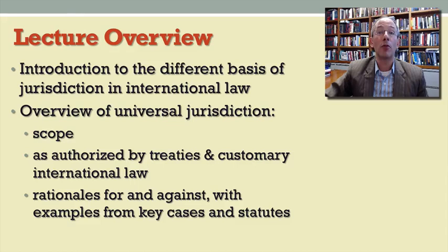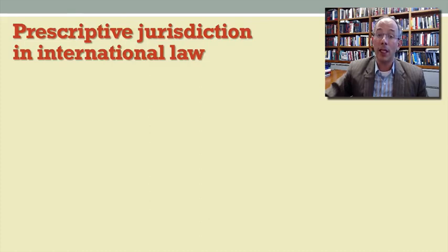Let's begin with the concept of prescriptive jurisdiction. The idea here is how a state can regulate activities of interest to that state. That could be individuals, it could be corporations, it could be certain kinds of transactions. International law has a number of rules in this area that determine the scope of authority that states have to apply their laws to these actors and transactions.